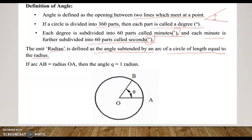This is the radius of the circle OA, so this is R — that is the radius — and this is an arc. If the length of the arc is equal to the radius, that is R, then this angle will be one radian. That is the definition of radian. We can also find the total radians in a circle.